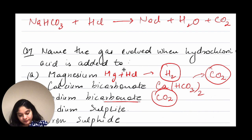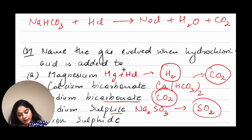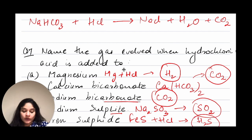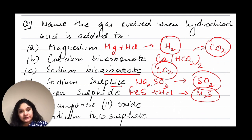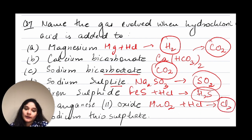Sodium sulfide — the formula is Na₂S — reacting with HCl will give sulfur dioxide gas. Then iron sulfide, FeS — when FeS combines with HCl, it gives us H₂S gas, that is hydrogen sulfide gas. Manganese dioxide, MnO₂ — MnO₂ plus HCl gives us chlorine gas as one of the products.